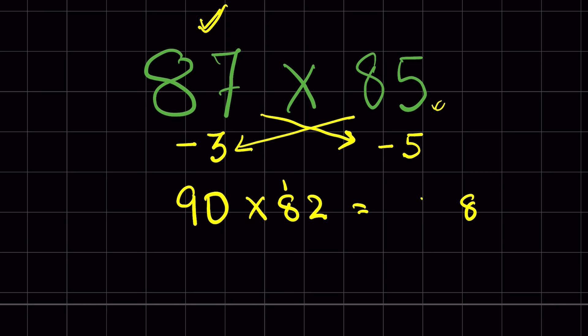82 times 9 will be 9 times 2 is 18, one carryover. 8 times 9, 72 plus 1 is 73. So 7380.